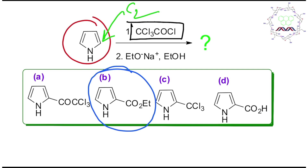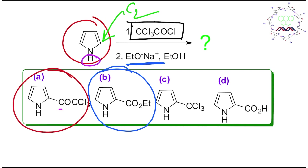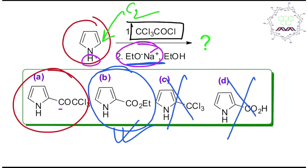If you understand the first step, the second step: just see that a new base or nucleophile is present. One possibility is that the NH proton could be abstracted, and another possibility is that the CCl₃ group can undergo acyl nucleophilic substitution. Since it is sodium ethoxide, it will produce an ethyl ester. Option C — carbon dioxide — is not possible because the carbon count doesn't match. And option D is not possible either, because the reaction is with ethoxide.